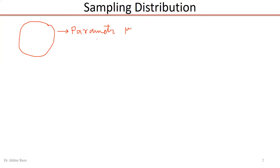Another way is to draw a random sample. Suppose I have selected a random sample of size n from this population and I have computed the mean of the sample, which is a statistic — x-bar. X-bar is the mean of this sample. We can estimate the value of the population parameter by this sample mean. This is called inferential statistics.